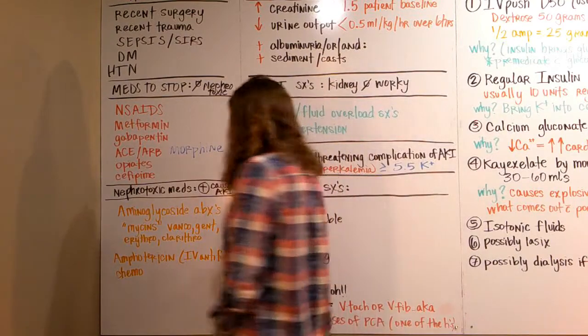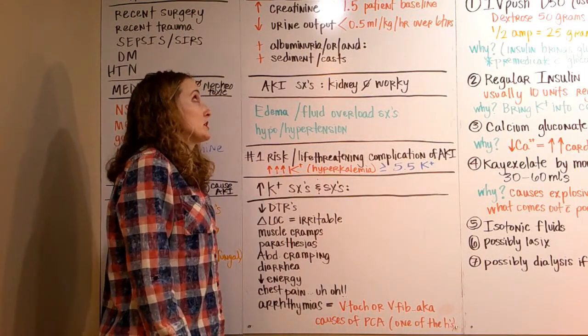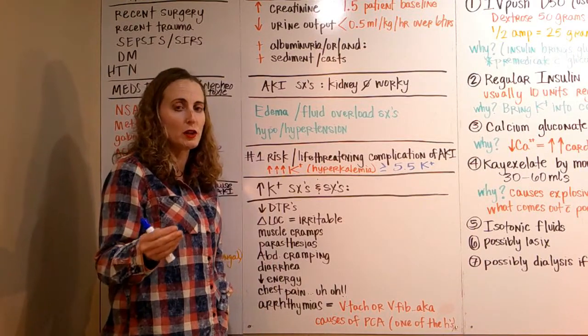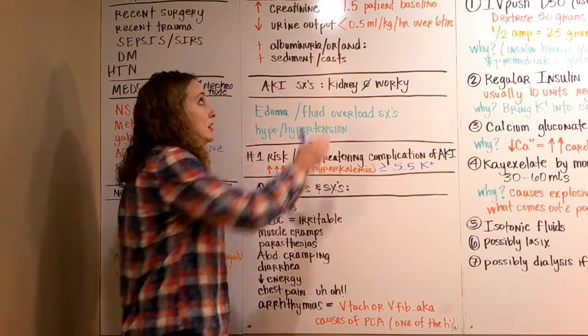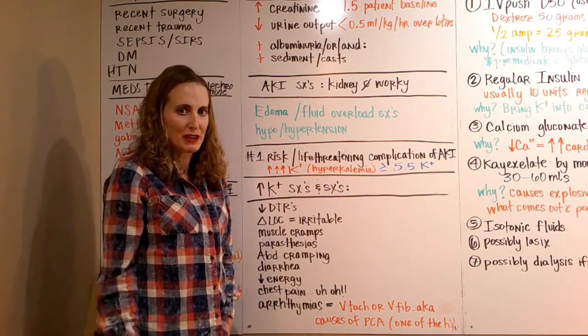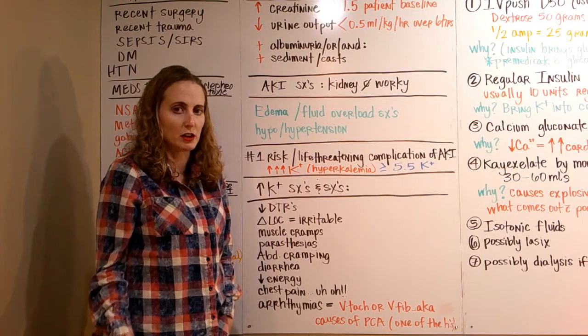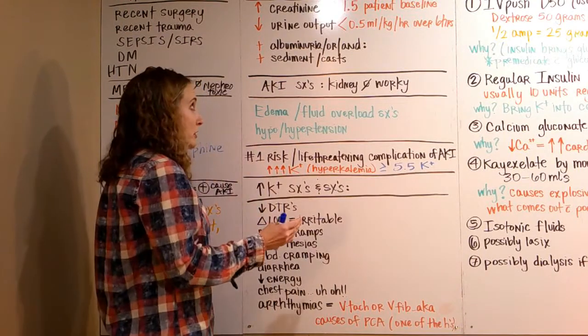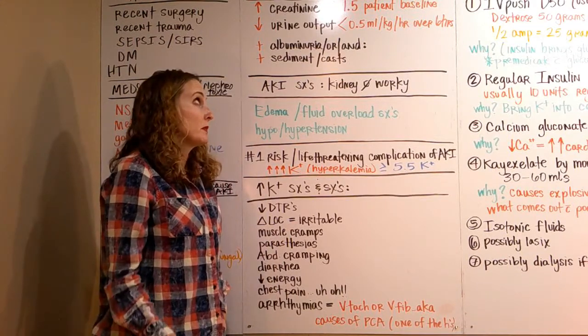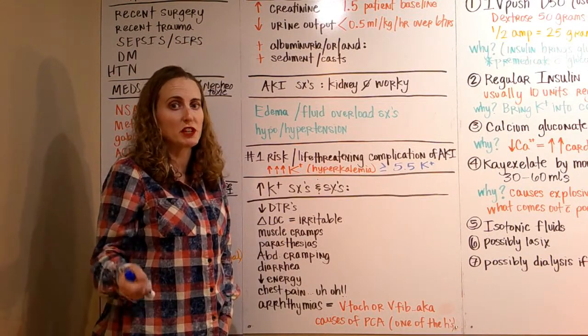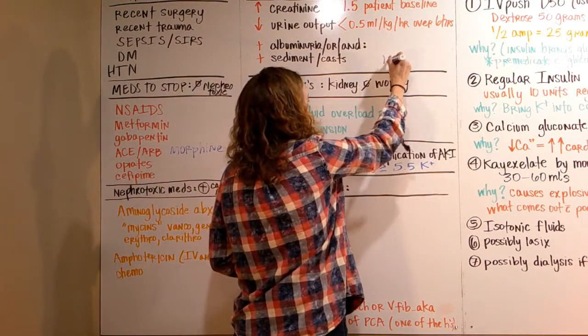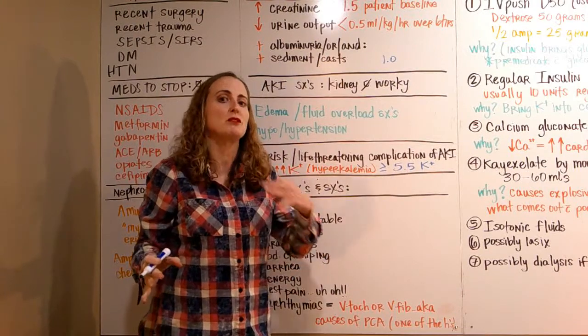Acute kidney injury is defined by a few criteria. First is the creatinine: if the creatinine is increased by 1.5 points above the patient's baseline, it's considered an acute kidney injury, along with urinary output and the presence of protein. So you have to know their creatinine before their elevation.